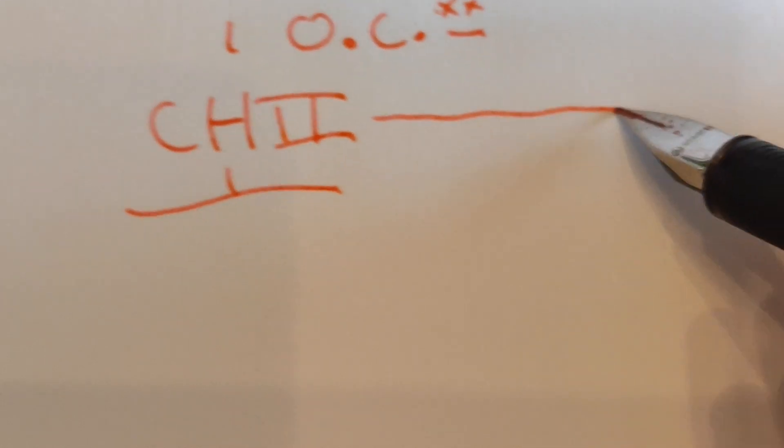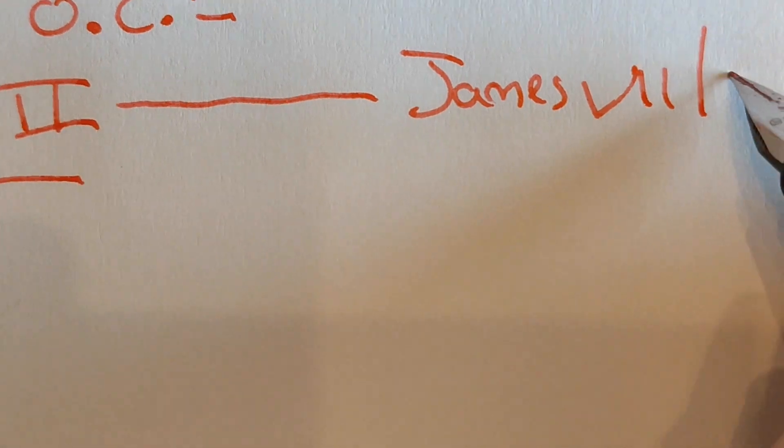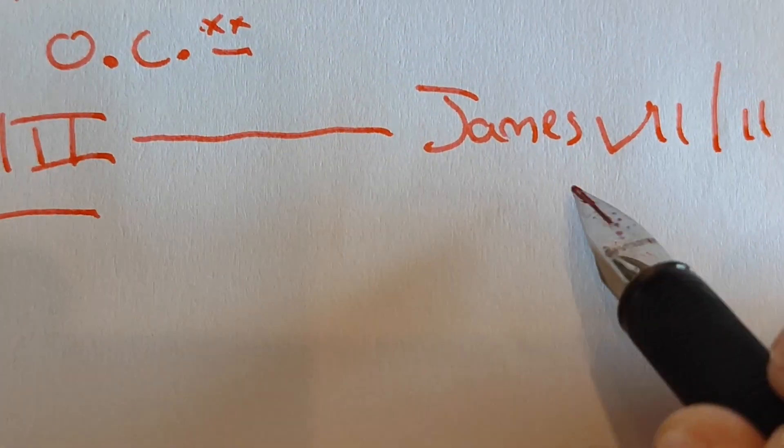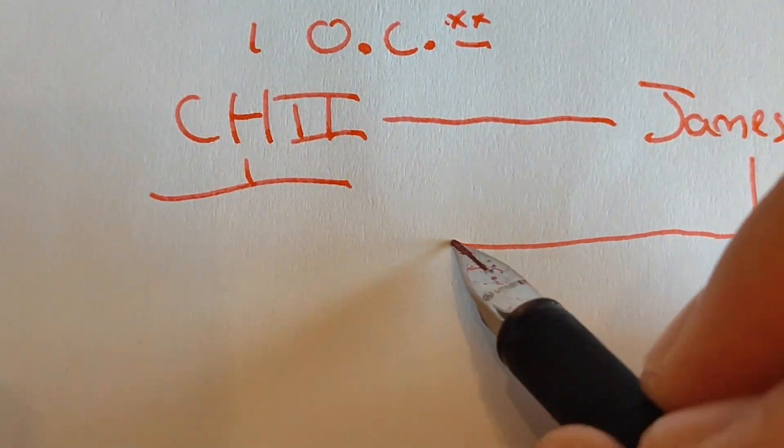And we go to his brother James, who became James VII of Scotland and James II of England. The problem with James VII, or James II, was that he was Catholic, and he was chased away and replaced by his daughter Mary, who married William, the Prince of Orange, a Protestant.